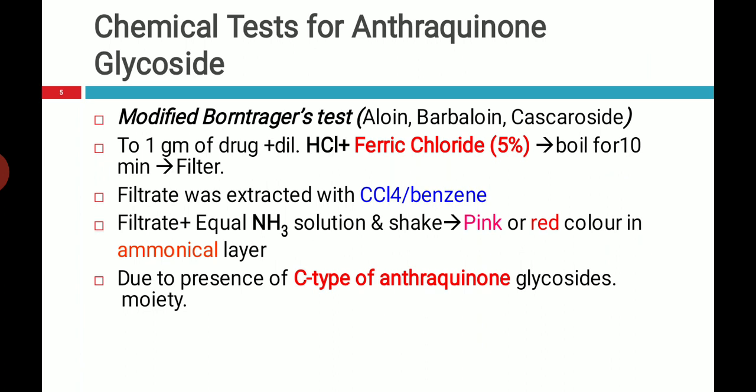This test is similar to the previous test except for the addition of 5% ferric chloride. The method is similar: take 1 gram of drug and dilute HCl, add ferric chloride, boil it for 10 minutes, filter, take the filtrate, and extract with CCl₄ or benzene. The filtrate obtained after extraction is treated with ammonia solution, which gives a pink or red color. Due to the presence of C-type anthraquinones, the modified Borntrager test is positive.